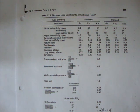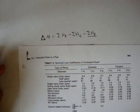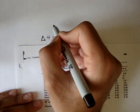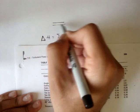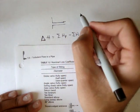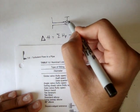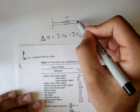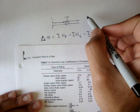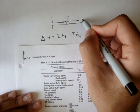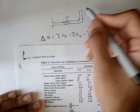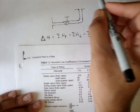We can figure out minor loss coefficients using this table. So say we had a pipe system, and the pipe system had an entrance, so it just had a regular entrance, and then we had maybe a fully open gate valve. And then if you go down, maybe it had a standard elbow, and then it went off to another pipe, and then it exited there.